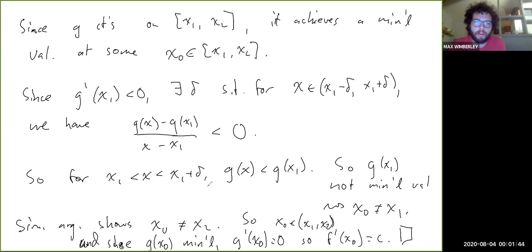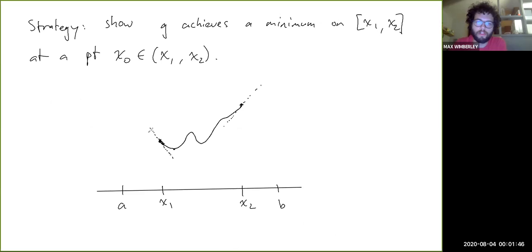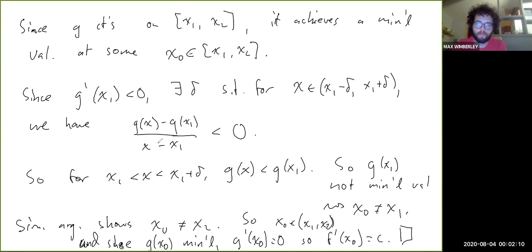So yeah, basically this picture sums it up. If the derivative here is negative and the derivative here is positive, there has to be a minimum somewhere strictly in between these two points, not at either one of them, and the derivative there has to be zero. That's the intermediate value theorem for derivatives. In the next and final section of this lecture, we'll look at how to compute derivatives of inverse functions.